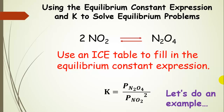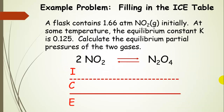Here's our example: we have a flask containing 1.66 atmospheres of nitrogen dioxide initially at some temperature — we always note the temperature because the equilibrium constant is temperature dependent. The value for the equilibrium constant under these conditions is 0.125. We want to calculate the equilibrium partial pressures of the two gases, starting with all nitrogen dioxide and allowing the system to come to equilibrium.